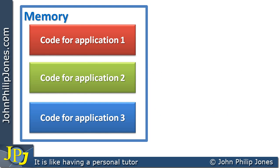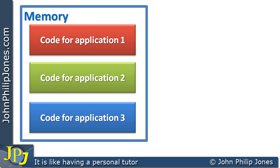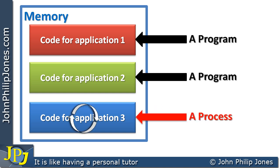At any one time, one of these applications is actually executing — shown here with a circle going around — and that one is called a process, while the other two that are just sitting there are called programs. At another point in time, another application will start to execute, and that one becomes the process while the other two are programs. For a program to become a process, it has to be in the computer's silicon memory, because it's from there that the fetch, decode, execute of each machine code instruction takes place.